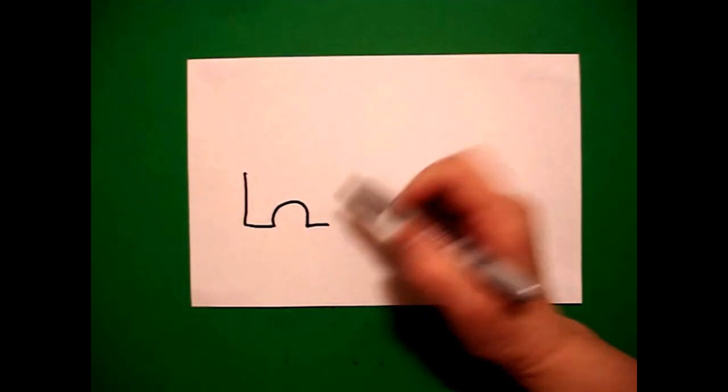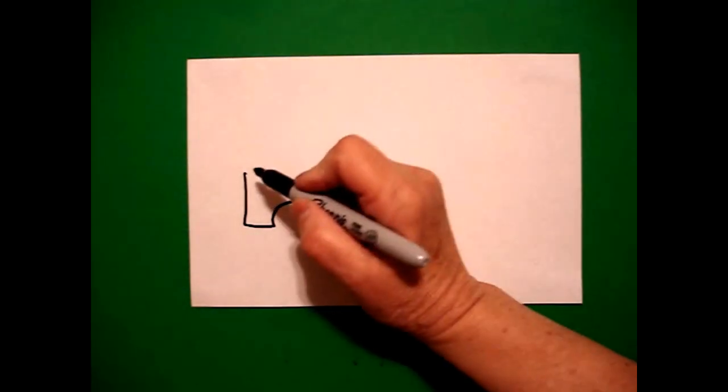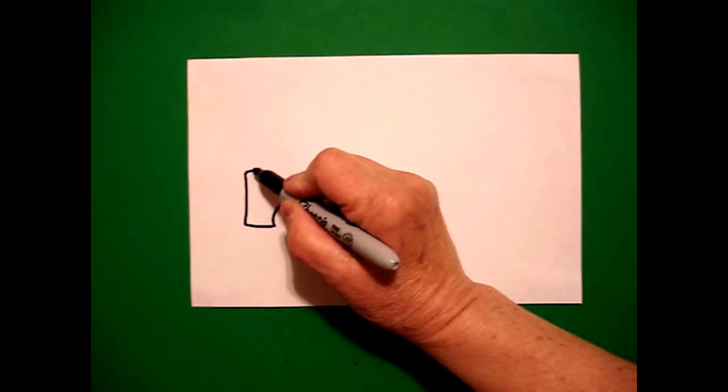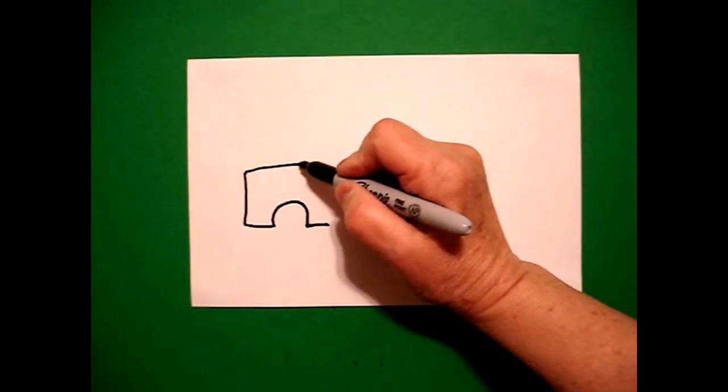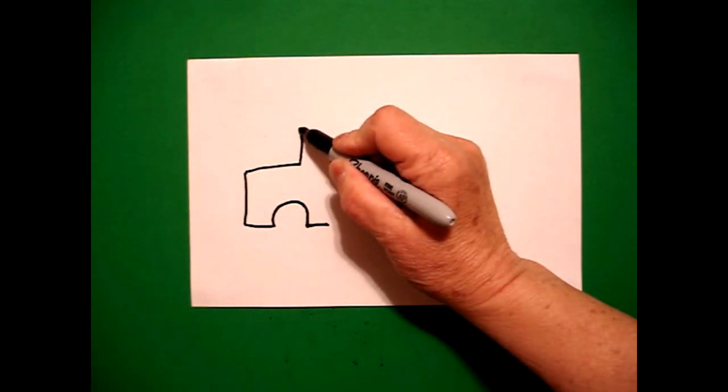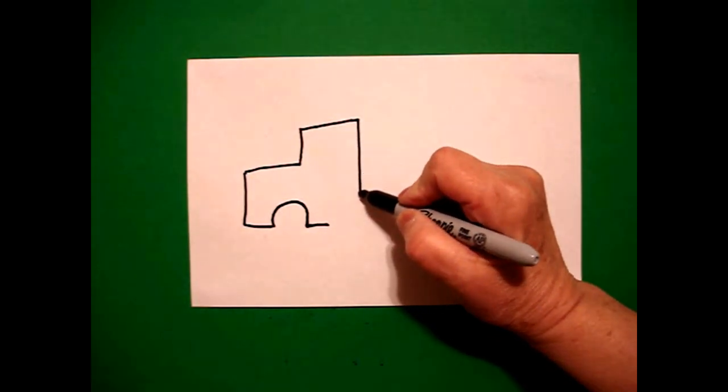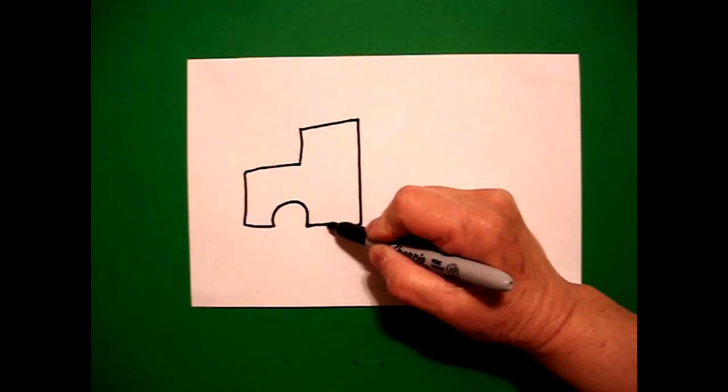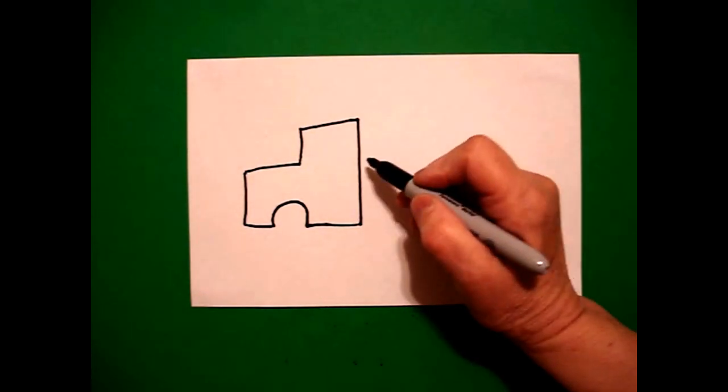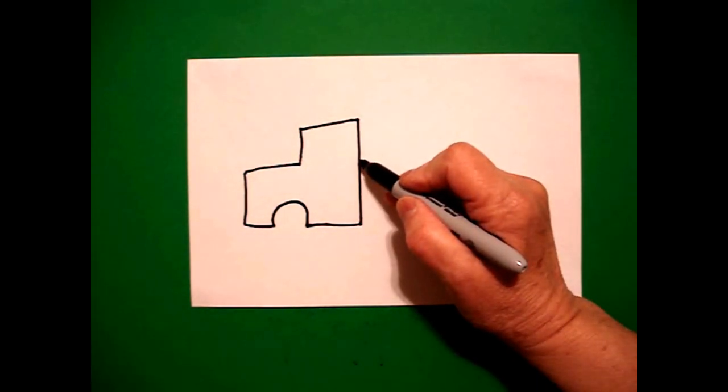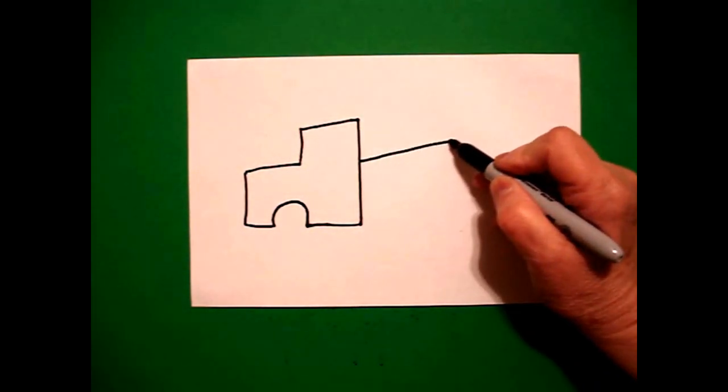I go back to the dot and I draw a straight line in, straight line up, straight line over, straight line all the way down, straight line connect. I come right even with the first line and I draw a straight line out.